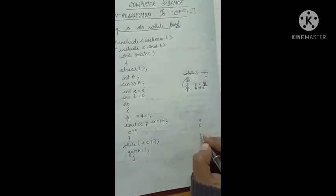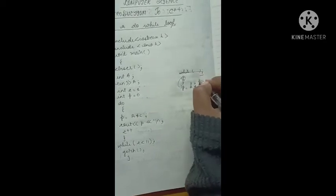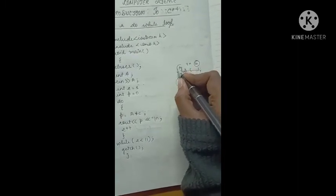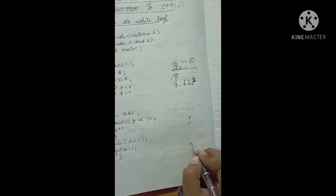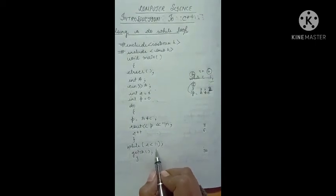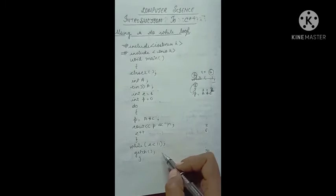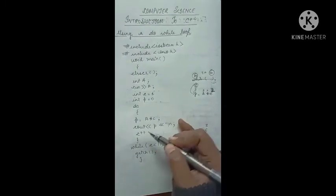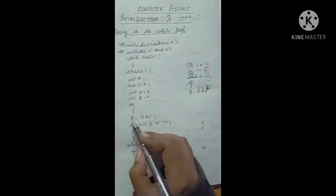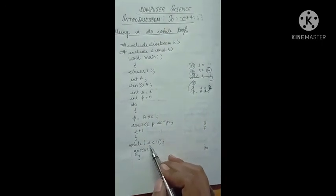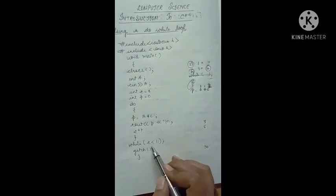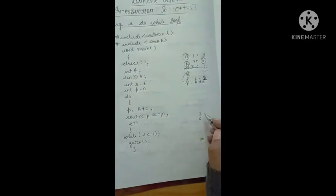This continues until the value of c becomes 10. When c is 10, you get 30 on the output screen. The condition checks whether 10 is less than 11 — yes, so c becomes 11. Now 3 multiplied by 11 equals 33, the code executes, and then the condition c less than 11 is checked. The value is 11, so the condition is false and the program stops.